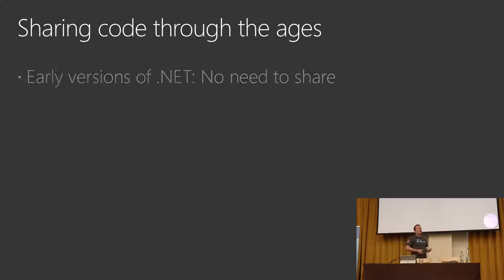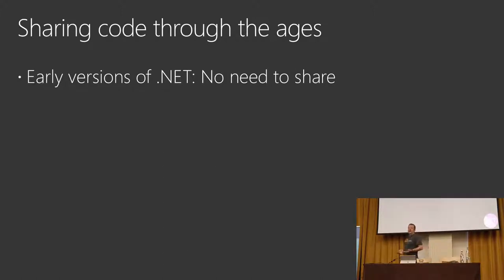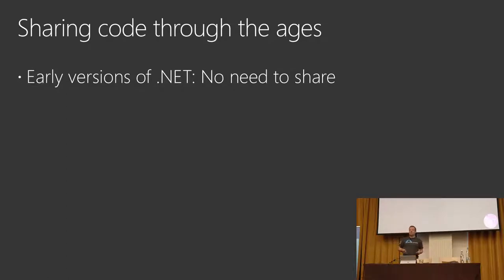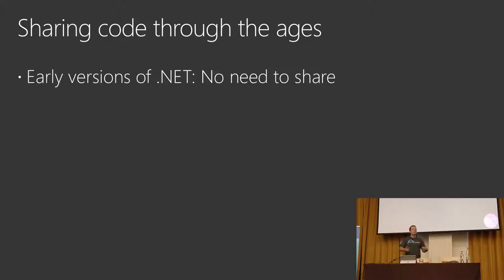In the very beginning, when we started doing .NET in 2001, there was basically no need to share. .NET 1.0 came with two client application platforms: one was ASP.NET on the web, and the other was Windows Forms on the desktop. People were either choosing one or the other — going all web or all desktop — and very rarely did we have to share code between those two platforms.